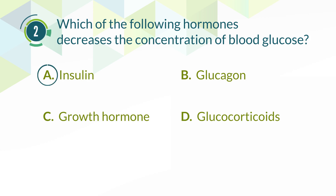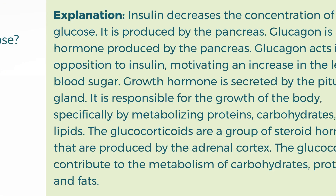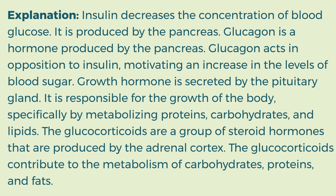The correct answer is A. Insulin. Explanation: Insulin decreases the concentration of blood glucose. It is produced by the pancreas. Glucagon is a hormone produced by the pancreas. Glucagon acts in opposition to insulin, motivating an increase in the levels of blood sugar. Growth hormone is secreted by the pituitary gland. It is responsible for the growth of the body, specifically by metabolizing proteins, carbohydrates,